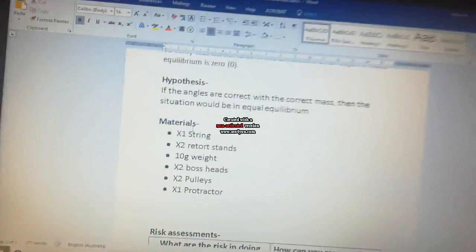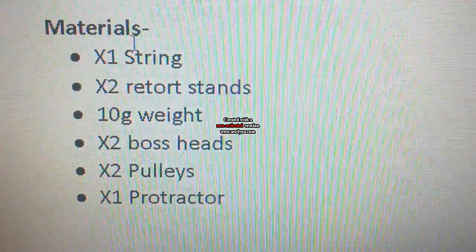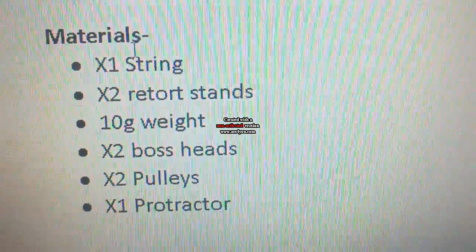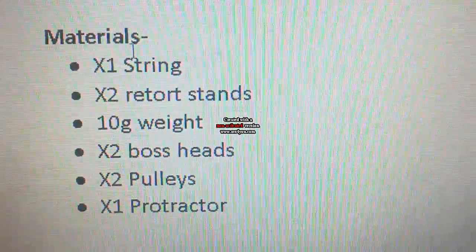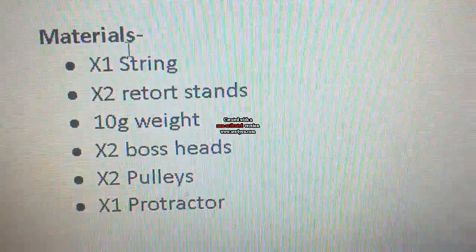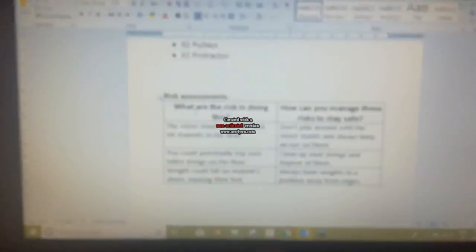Materials you will need: one string, wool or nylon doesn't matter, two retort stands to hold them up, 10 grams of weight, two boss heads, two pulleys, one protractor, and also a Newton's spring scale.